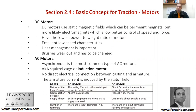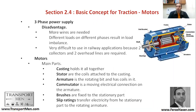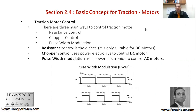AC motors are asynchronous, or sometimes called induction motors. There is no direct connection between the casing and the armature, and the armature current is induced by the stator field. So through the stator's magnetic field, the current is induced in the armature. This is the key difference between DC motors and AC motors.